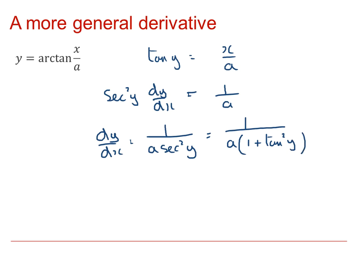But from above tan squared y is x squared over a squared. So this must be equal to 1 over a multiplied by 1 plus x squared over a squared.